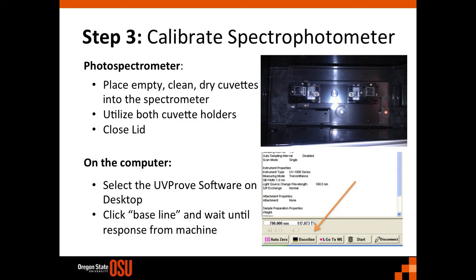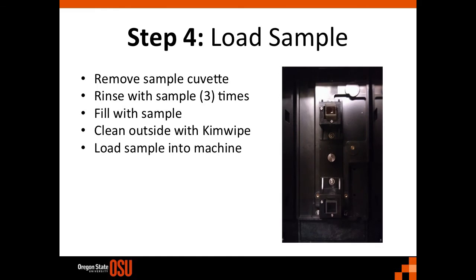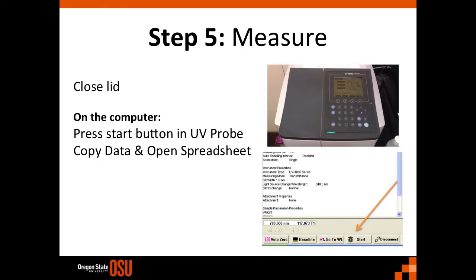Go to the software on the desktop and click baseline, and wait for the machine to respond. Once the baseline has been set, it is now time to load the sample. Remove the front cuvette only — this is the sample cuvette. Rinse the cuvette with sample three times, and then fill it. Clean the outside with kim wipes, and then load the sample. Close the lid and move over to the software. With the lid shut, press the start button in the UV probe software. You will hear the machine start up, and the data will begin to populate the cells. When the measurement is complete, highlight the cells and copy the data.